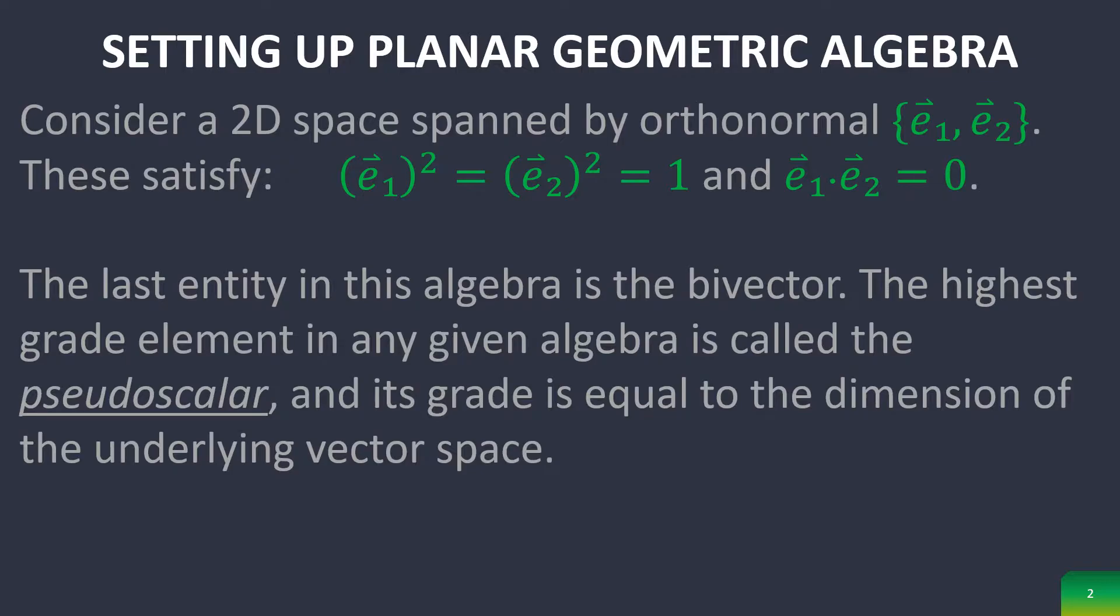Consider a 2D space spanned by orthonormal basis vectors E1 and E2. If you remember, this is the definition for a basis. They satisfy the following equations, and it's easy to verify that the scalar product of them is equal to zero.